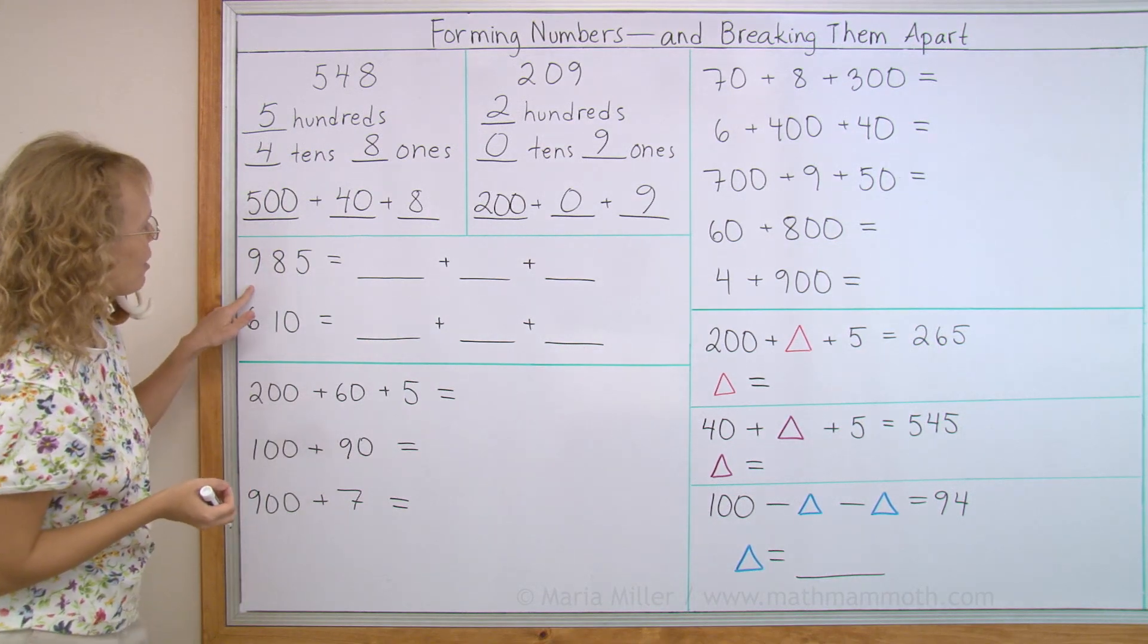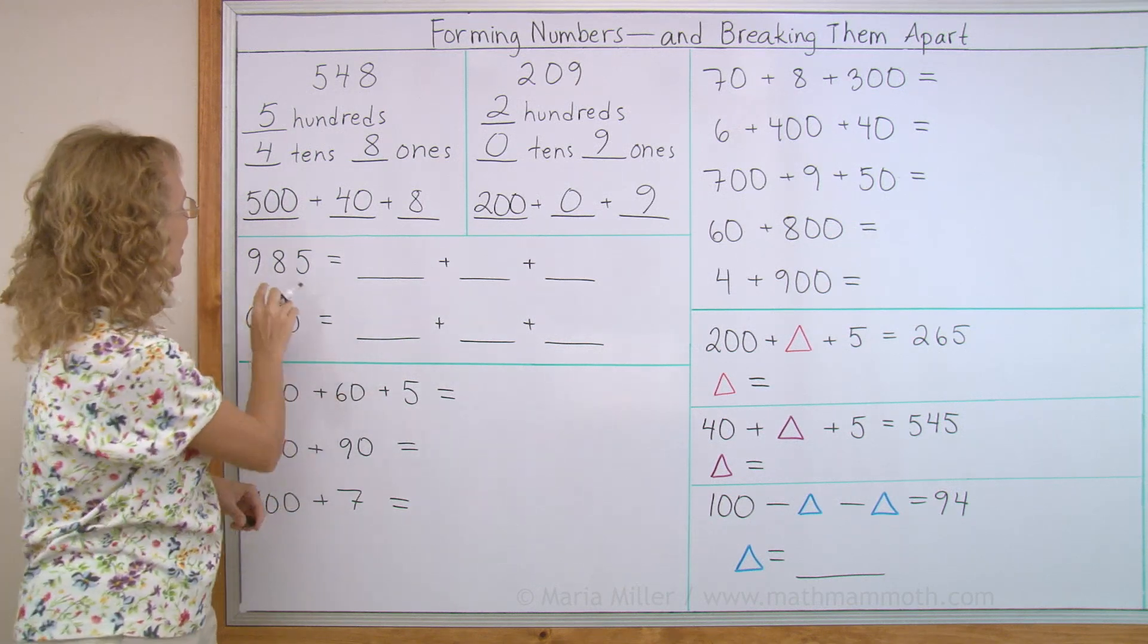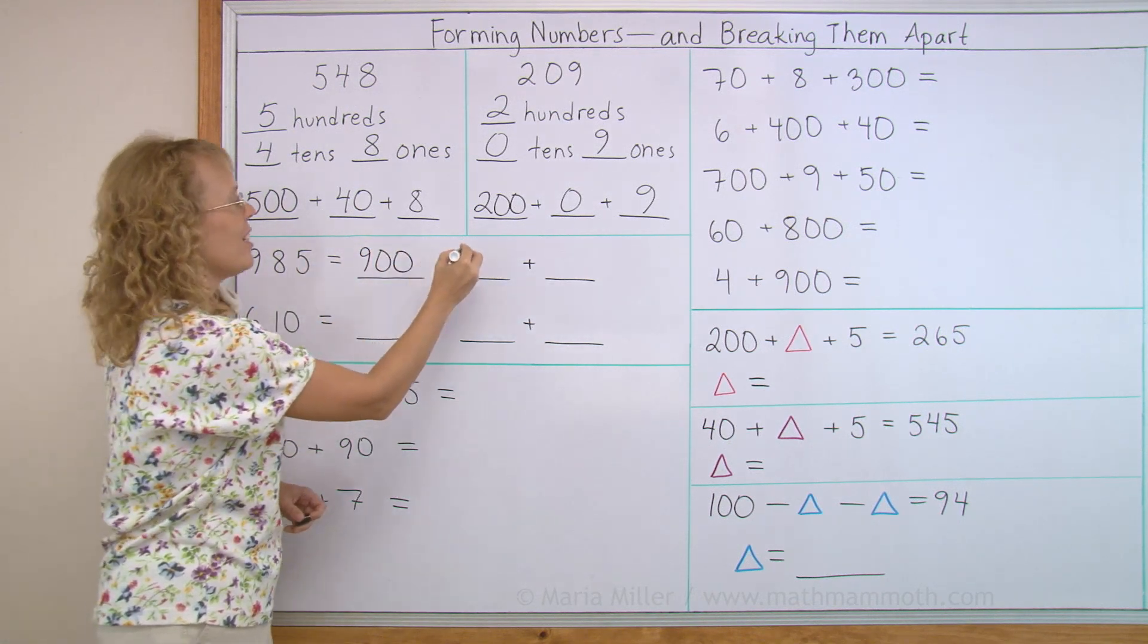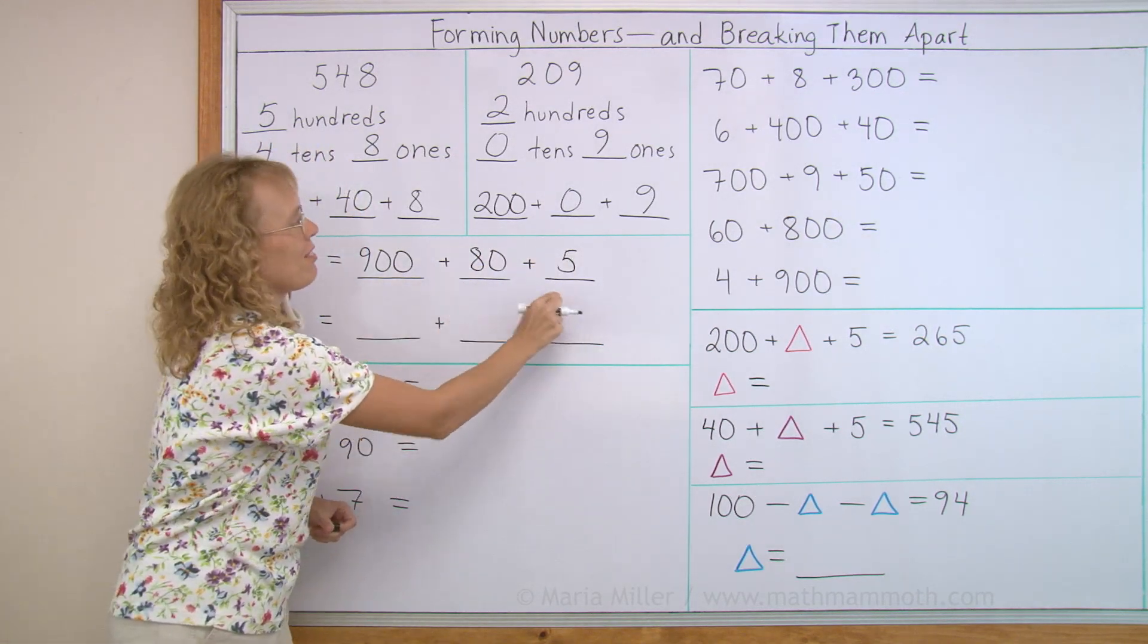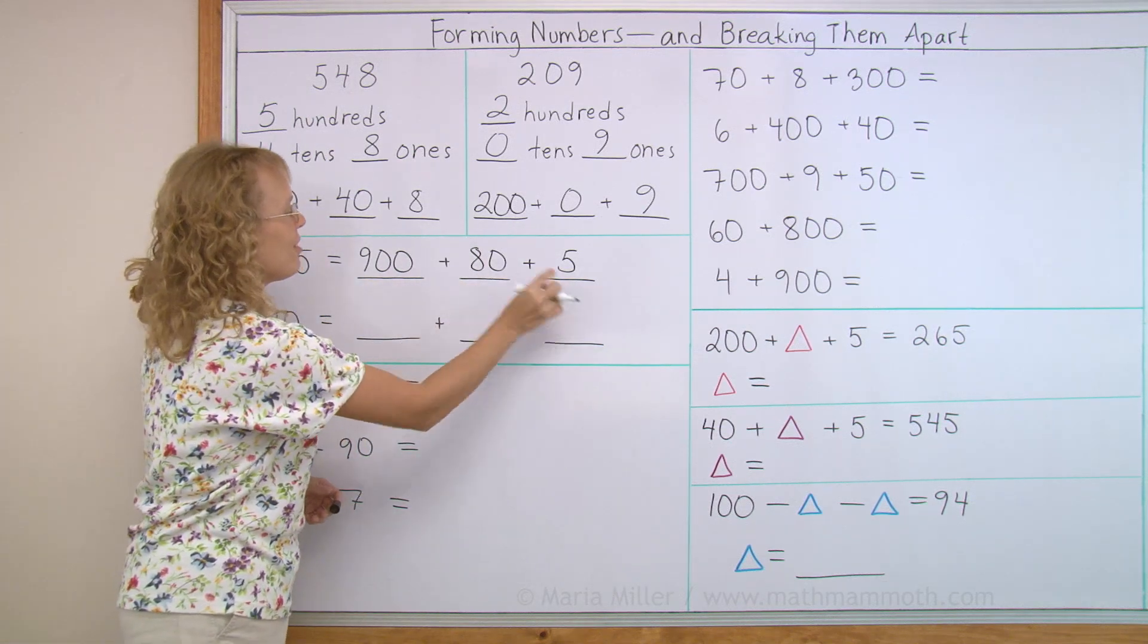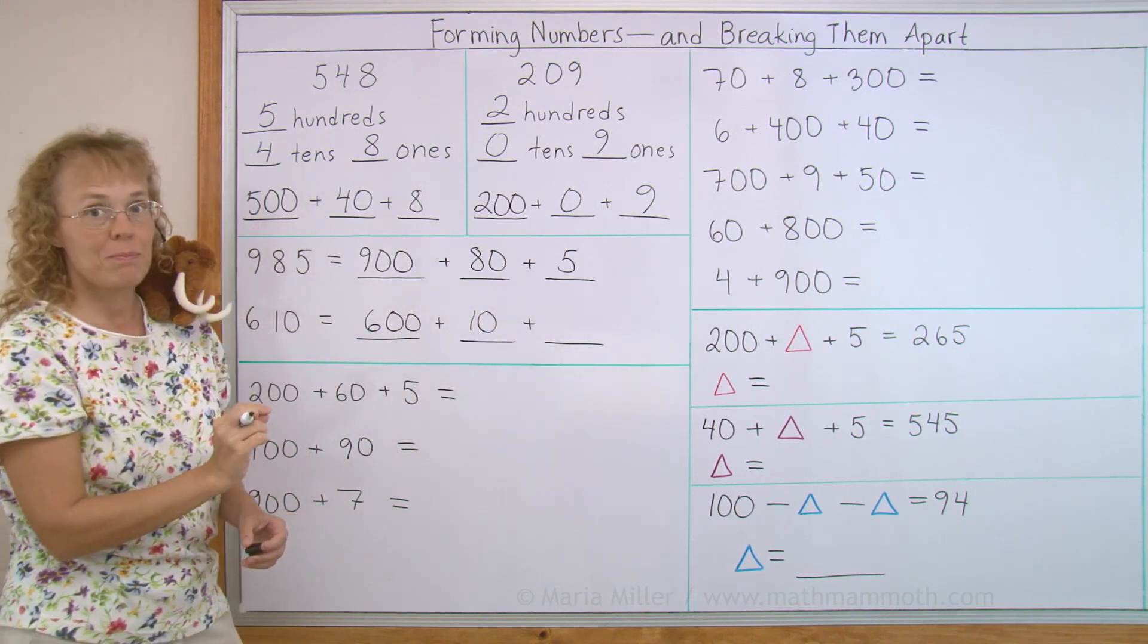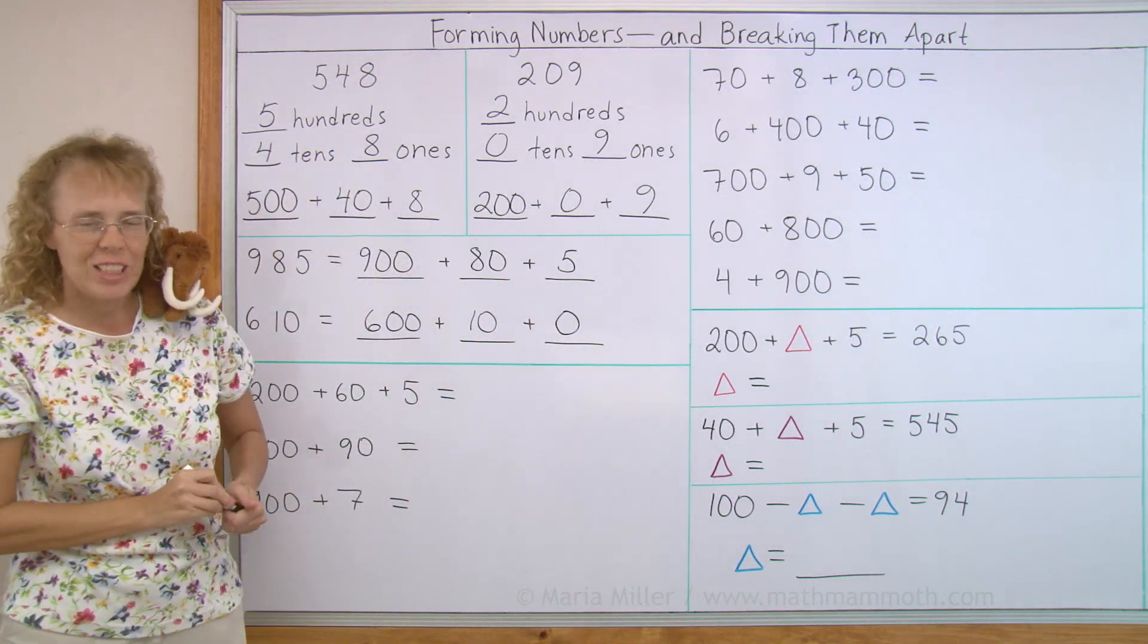Now we're going to do the same over here. Write these two numbers as a sum of their parts. This is what number? Nine hundred eighty-five. As a sum, nine hundred and then eighty, and then five. Notice that I do not write here nine plus eight plus five. No, that wouldn't be right. It's nine hundred and then eighty and five. And then here, six hundred, ten. So we get six hundred and ten. And over here, this one has no ones, so I put zero here. That's pretty easy, I hope.